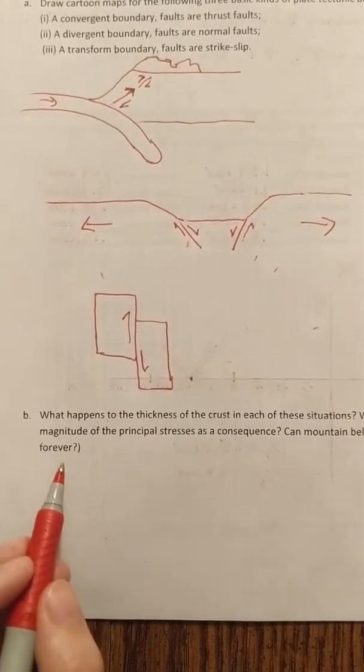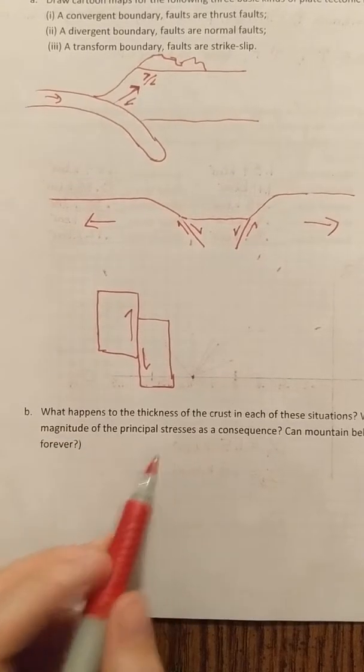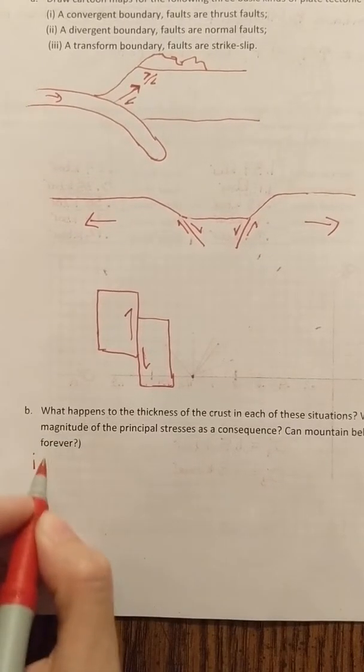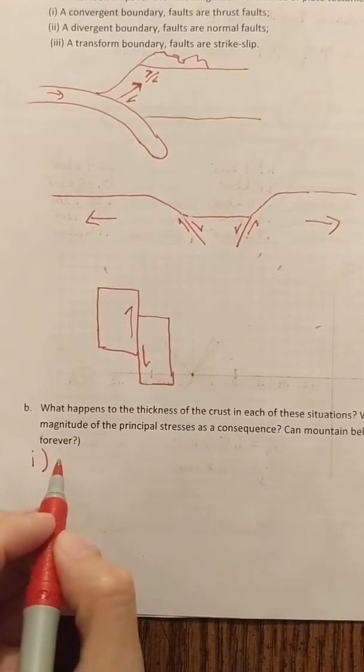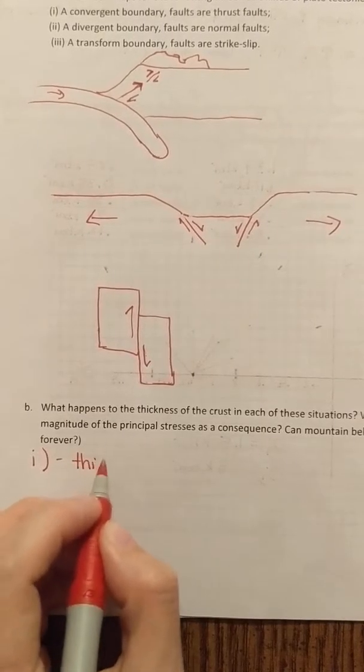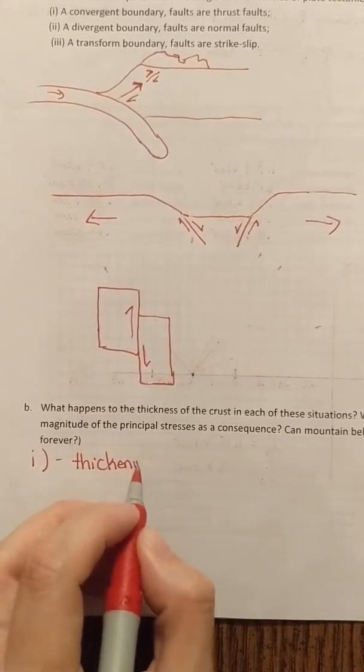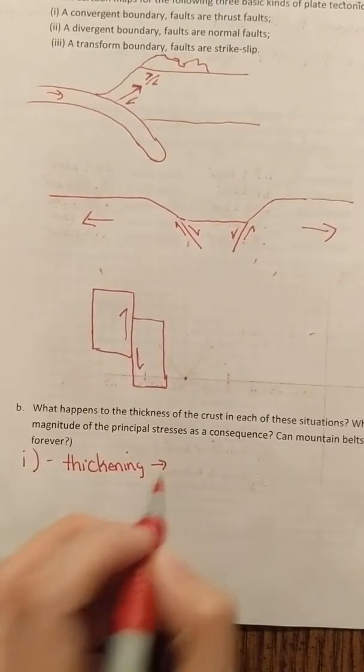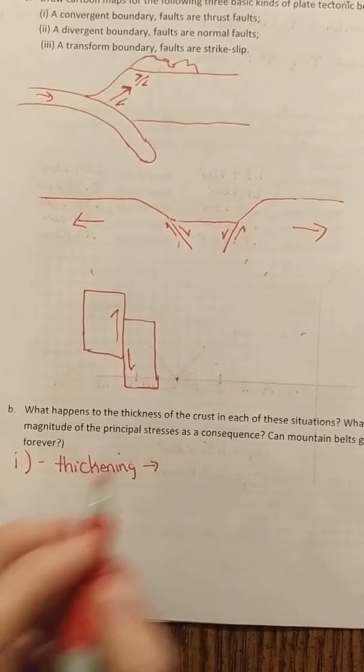Now in terms of the thickness at each of these scenarios. Scenario one, our continental convergent boundary. We are thickening, which means the magnitude of the principal stresses increases. So you're going to have overall increasing forces vertically and horizontally as you're thickening the crust.